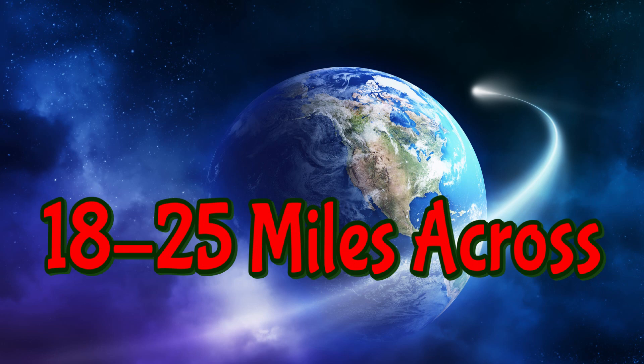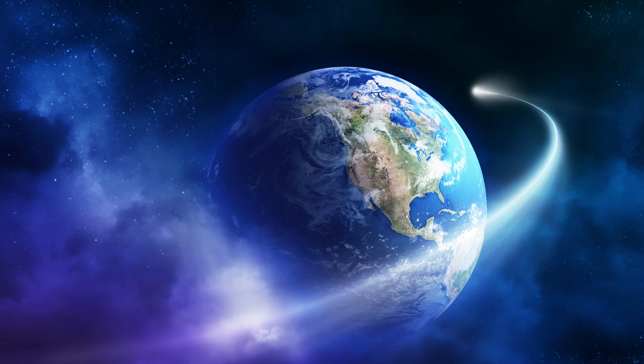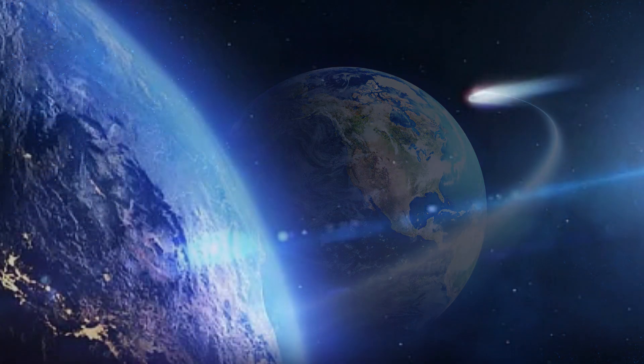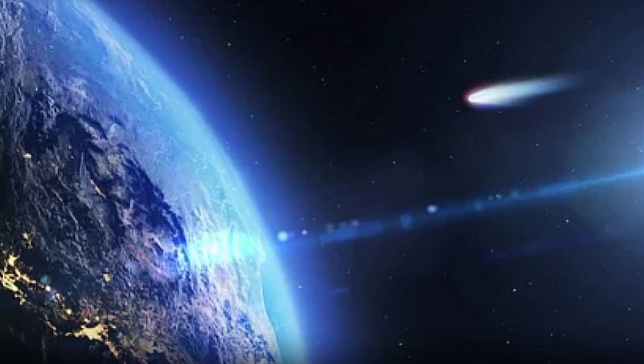Besides being so massive, it's considered a cryovolcanic comet, meaning that it has ice eruptions. In the last four months, there's been two explosions off this comet, so it's got two tails coming off of it. That's why they're calling it either the Devil's Comet or the Millennial Comet.